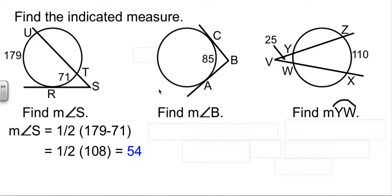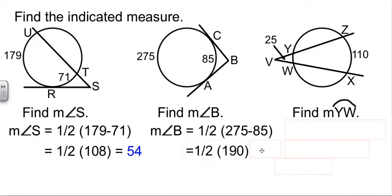Our next one at first glance looks like there's not enough information. But we can figure out the missing arc because together it's 360. So 360 minus 85 gives me 275. Now I can find the measure of angle B. This is two tangents. It's outside, so the angle is half the difference. 275 minus 85 is 190. Half of that is a 95 degree angle.